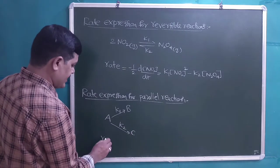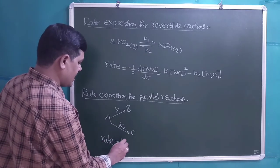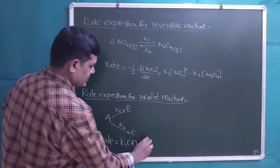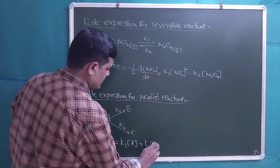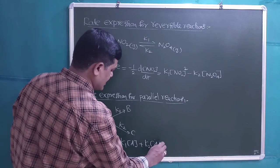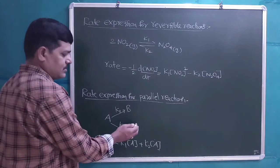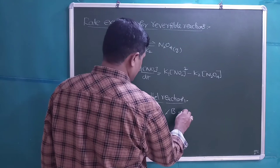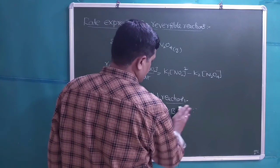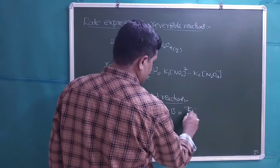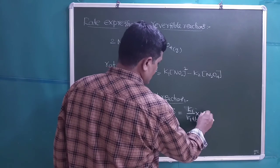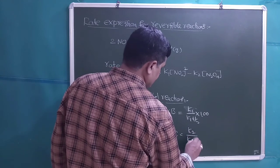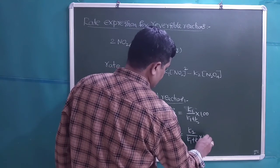The rate law for this parallel reaction is: rate = K1[A] + K2[A]. The percentage of B formed is (K1 / (K1 + K2)) × 100, and similarly the percentage of C formed is (K2 / (K1 + K2)) × 100.